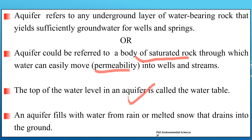Aquifers are filled or replenished by water from rain and melted snow that infiltrates the ground. This water percolates down through the soil and porous rock layers until it reaches the aquifer. The process of water seeping into the ground and refilling an aquifer is known as recharge. Effective recharge is essential to maintain the water levels in aquifers and ensure a sustainable supply of groundwater.